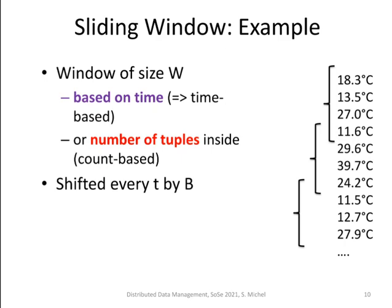We can also do a count-based definition. Count-based means we define how many tuples are to be considered in the window. In this example, we have a window consisting of four values, and the window is shifted every so many time ticks or tuple entries. One tuple comes in and another comes out. Here we are shifting the window by three, so there is an overlap of one. This gives us the second window, the third window, and so on. This depends on parameters: how large is the shift, how large is the window, how are you defining the window. So sliding windows are not always defined in a certain precise way; this depends on the application and what you want to compute.